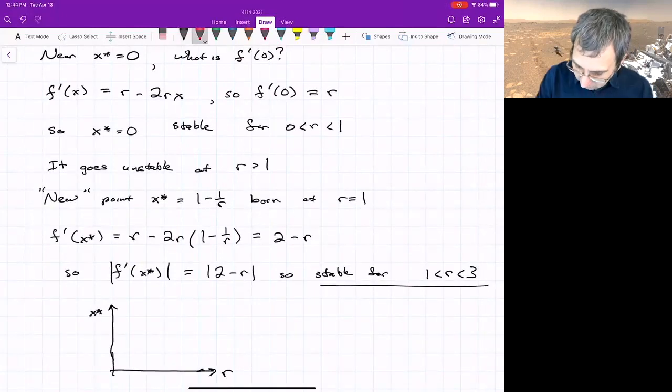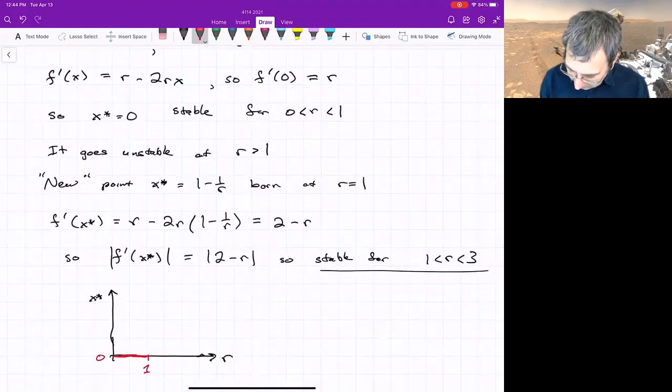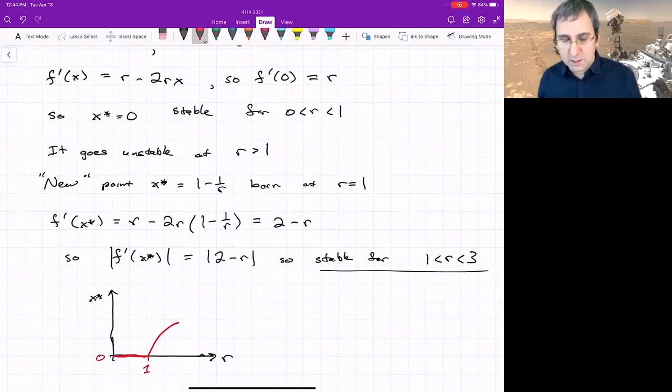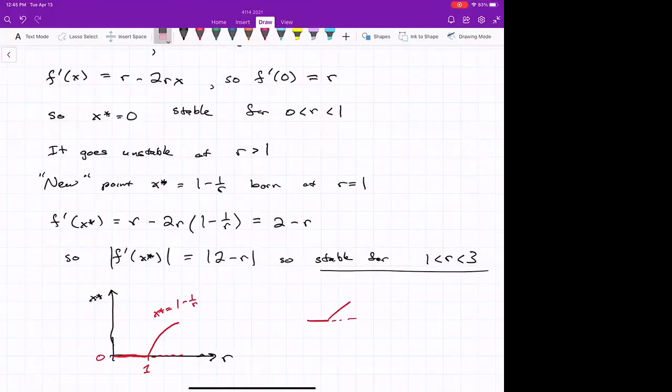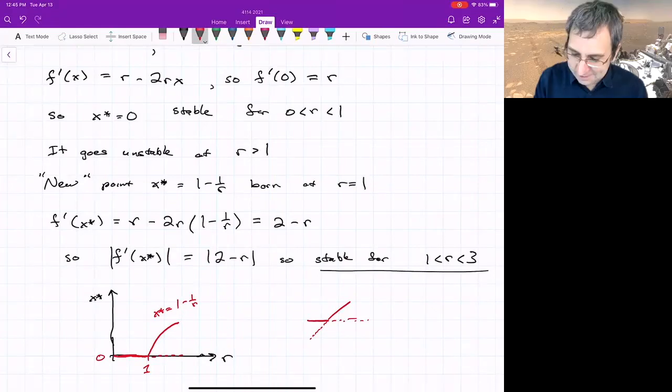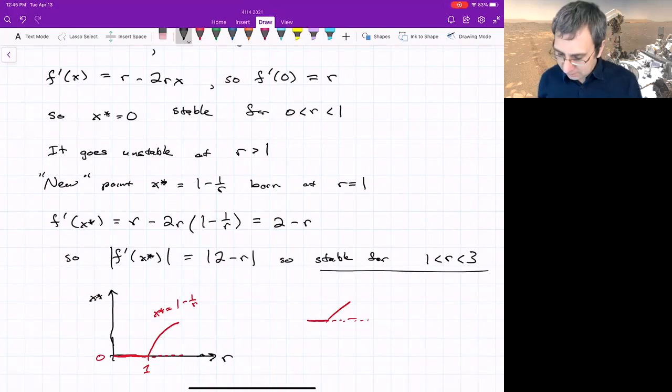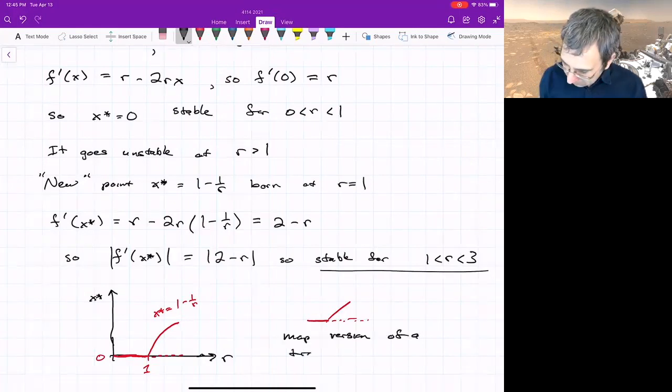If we sketch what we have in terms of the fixed point, this is the first part of that bifurcation diagram. We've got a stable point at zero until we hit the value 1, and then there's a branch that goes like 1 - 1/r that's stable, whereas the origin becomes unstable. In terms of one-dimensional bifurcations that we talked about early in the course, this looks like a transcritical bifurcation. We have a map version of a transcritical bifurcation.